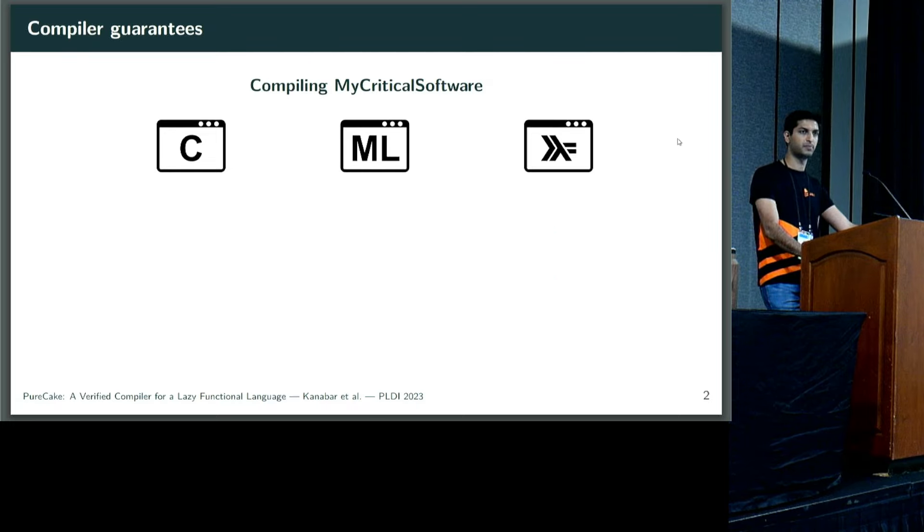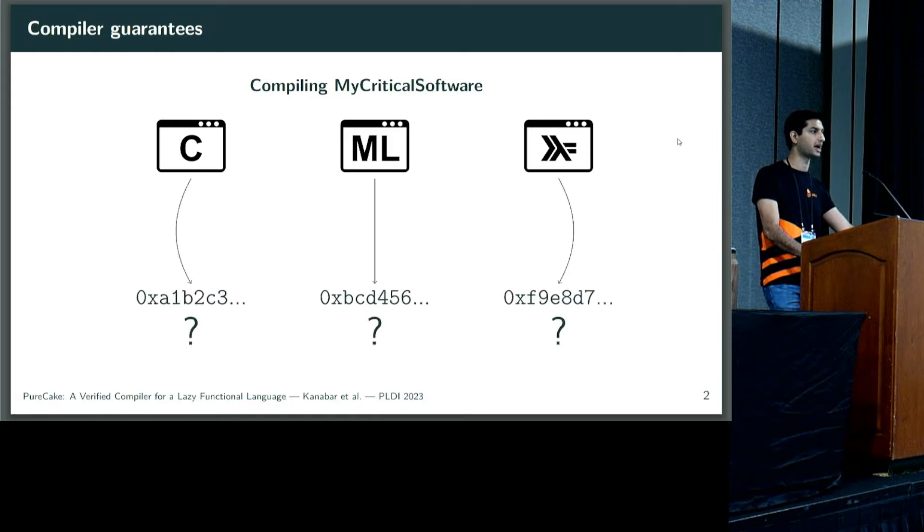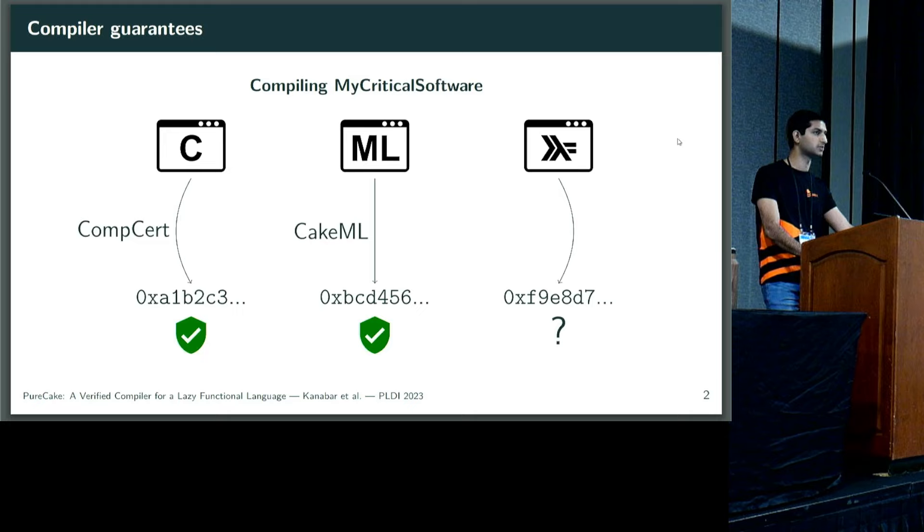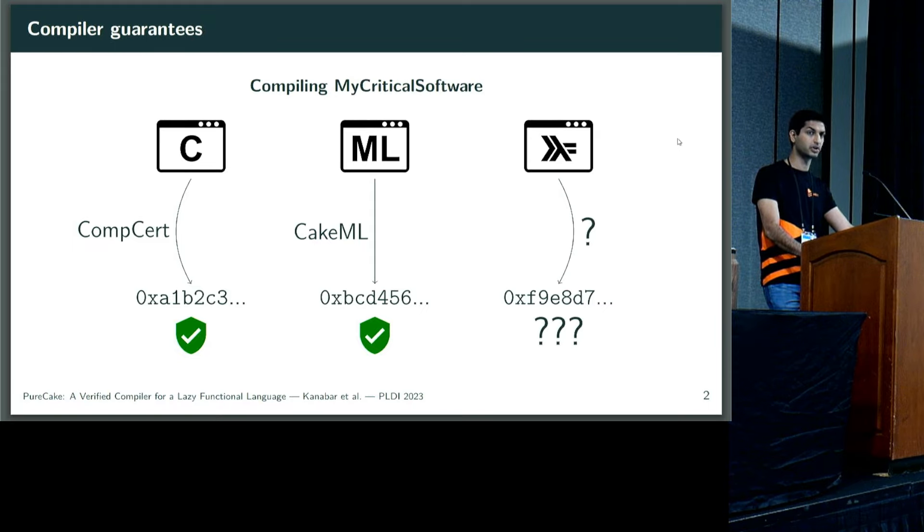We also need to worry about binary level guarantees. What happens when we take our code in these languages, compile them to a binary, and run them on actual hardware? End-to-end verified compilation is a guaranteed way to preserve source-level behavior at the binary. For C-like and ML-like languages, we have CompCert and CakeML, two end-to-end verified compilers that will take source code to the same semantics in the binary. For Haskell, there seems to be a bit of a gap. So we're in an unfortunate position where a language with a lot of guarantees doesn't have a verified route to a binary, until PureCake, that is.